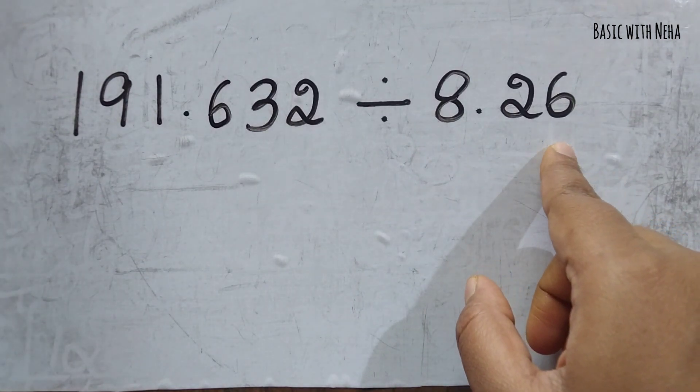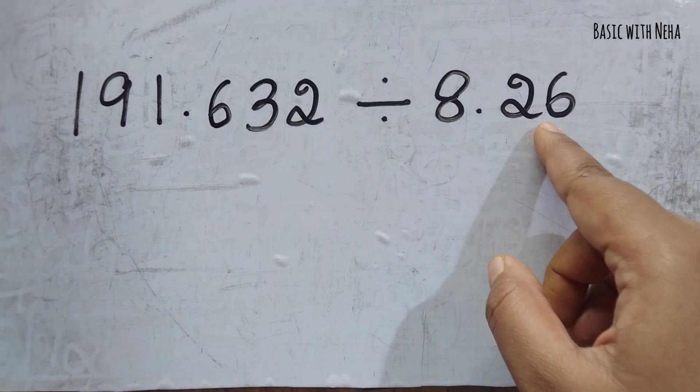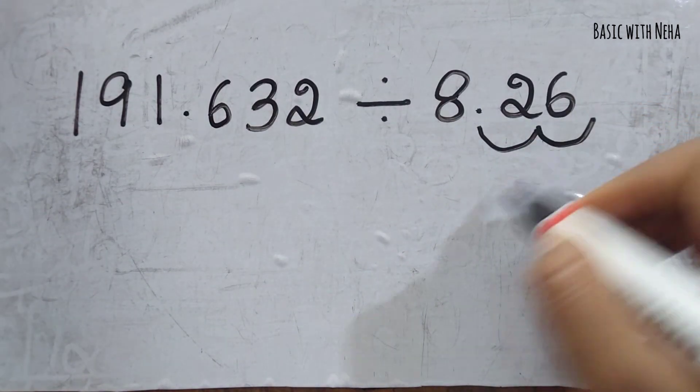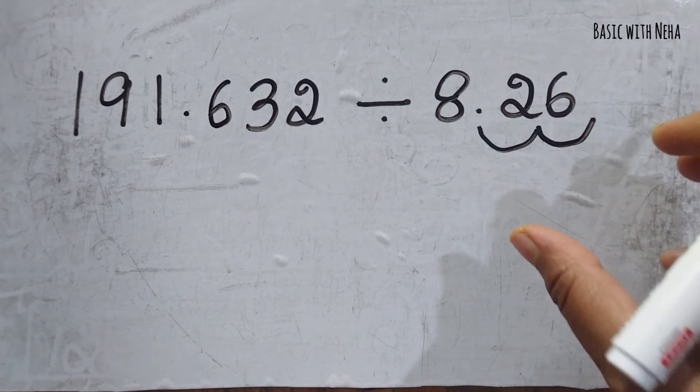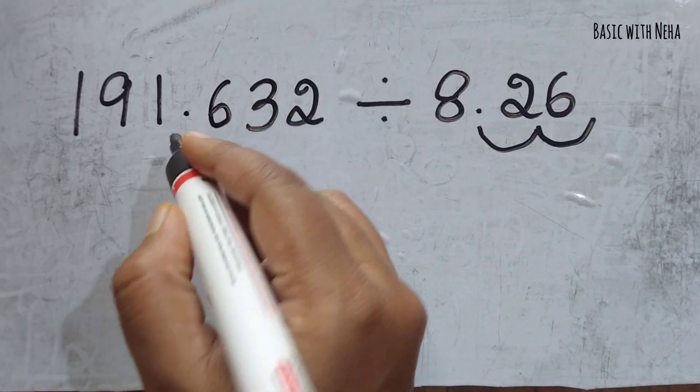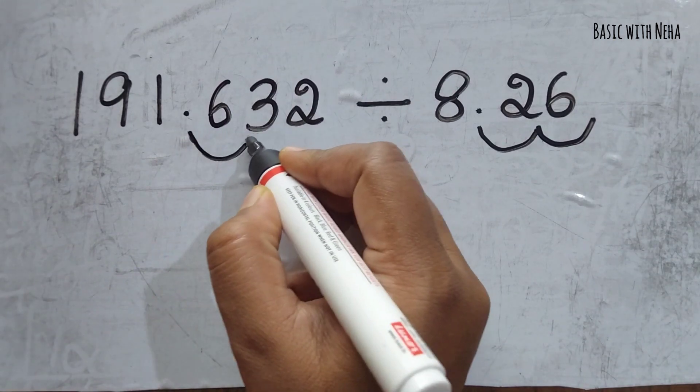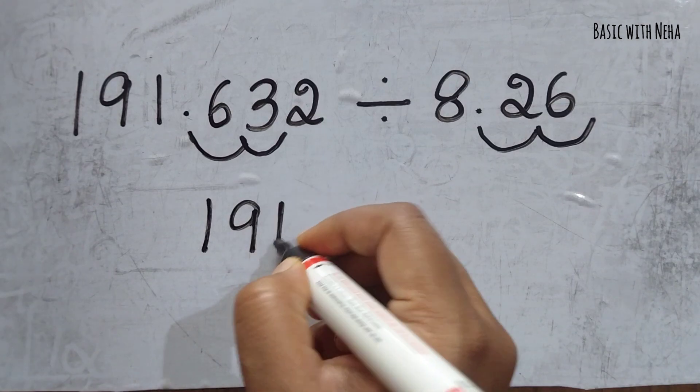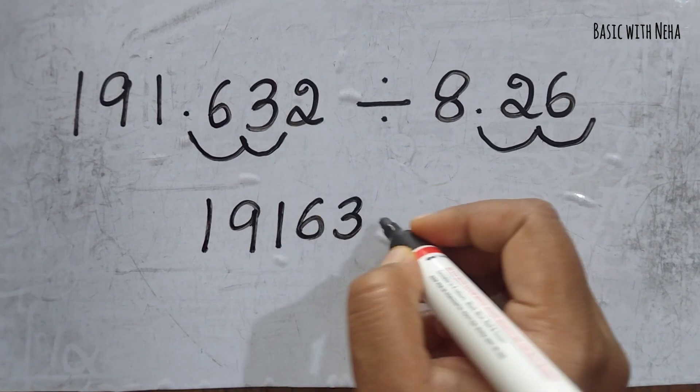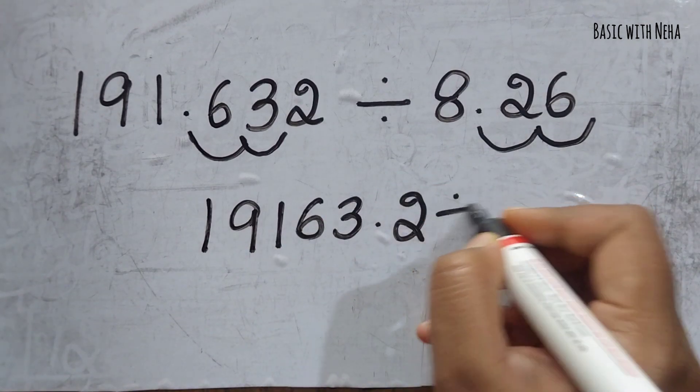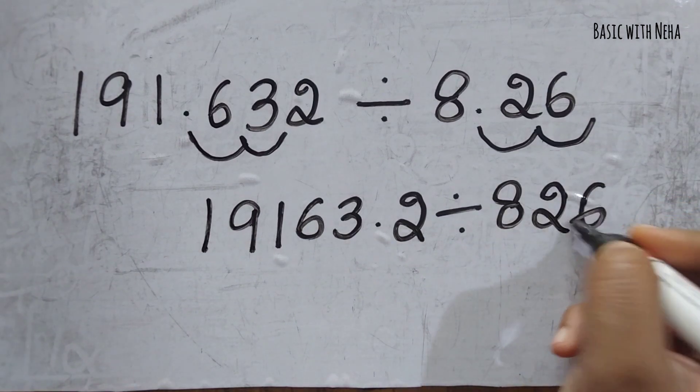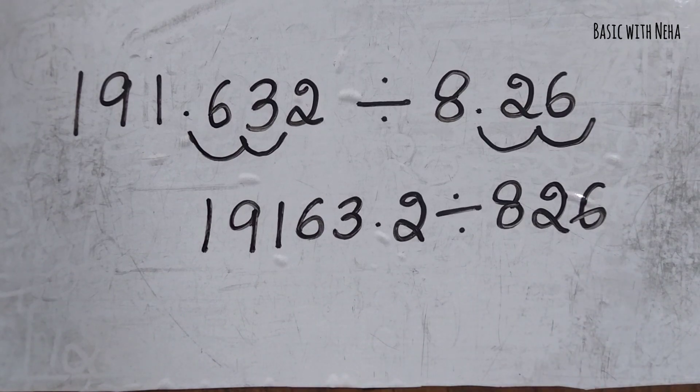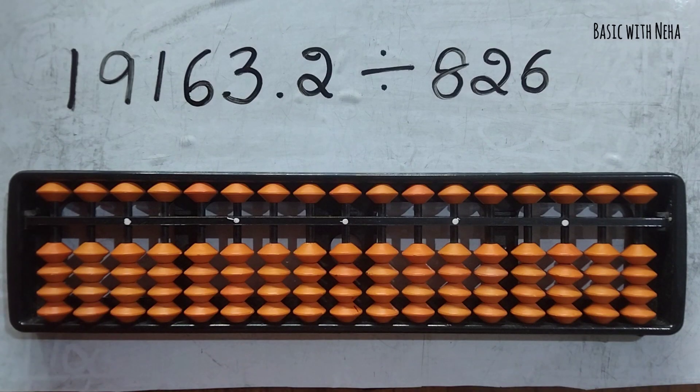In normal math, we usually don't keep decimal places in the divisor, so I'm going to move two places to get rid of this decimal point. Since I've moved two places in the divisor, I'm going to perform the same thing in the dividend. So my new question will be 19163.2 divided by 826.